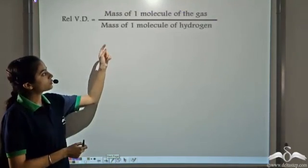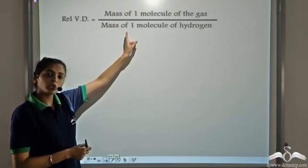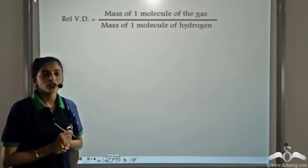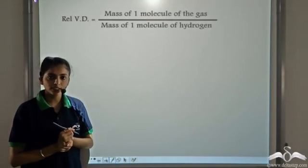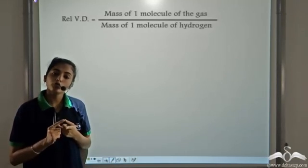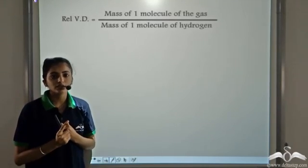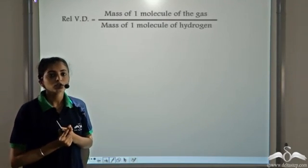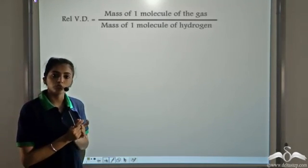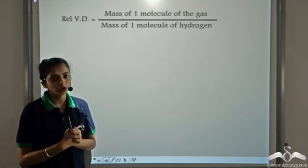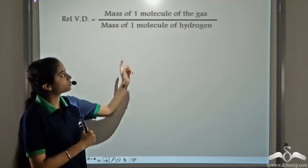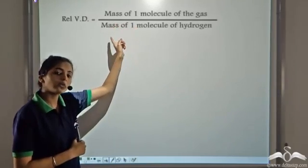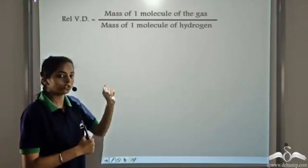So we get the mass of one molecule of a gas divided by the mass of one molecule of hydrogen gas, because Avogadro's law states that equal volumes of all gases under the same conditions of temperature and pressure contain equal numbers of molecules. So when we talk of the same volume V, they contain the same number of molecules — so we take one molecule for both.